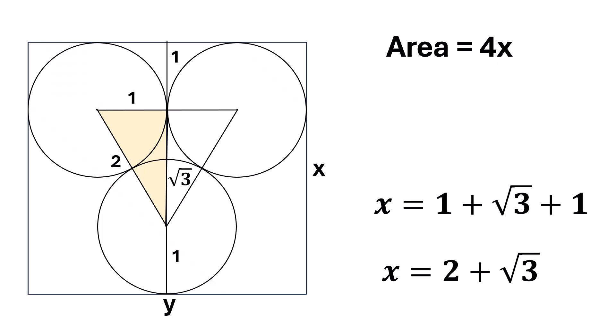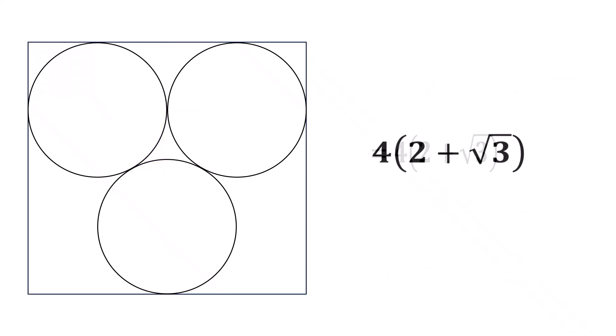Substituting the value of x, we get the area of the rectangle as 4 times 2 plus square root of 3. And that is our answer.